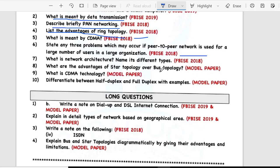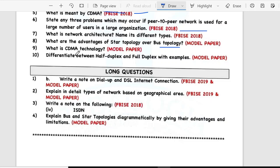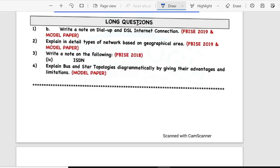Eighth, advantages of star topology and bus topology. Ninth is CDMA technology. Tenth is differentiate between half duplex and full duplex with examples. Long questions: write a note on dial-up and DSL internet connection. Second is long explain in detail types of network based on geographical area.